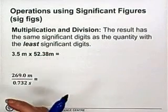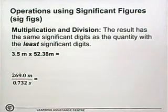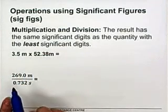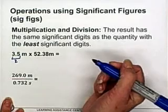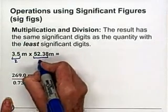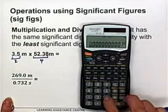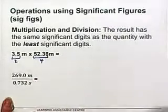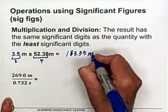When you're multiplying and dividing, your answer has to have the same number of significant digits as the quantity that has the least significant digits. So if we're multiplying 3.5 metres by 52.38 metres, the one with the least significant digits is 3.5. This has 2 sig figs. 52.38 has 4 sig figs. So our answer has to have 2 sig figs. If we multiply 3.5 times 52.38, we get 183.33 — and don't forget that's metres times metres, which is metres squared.